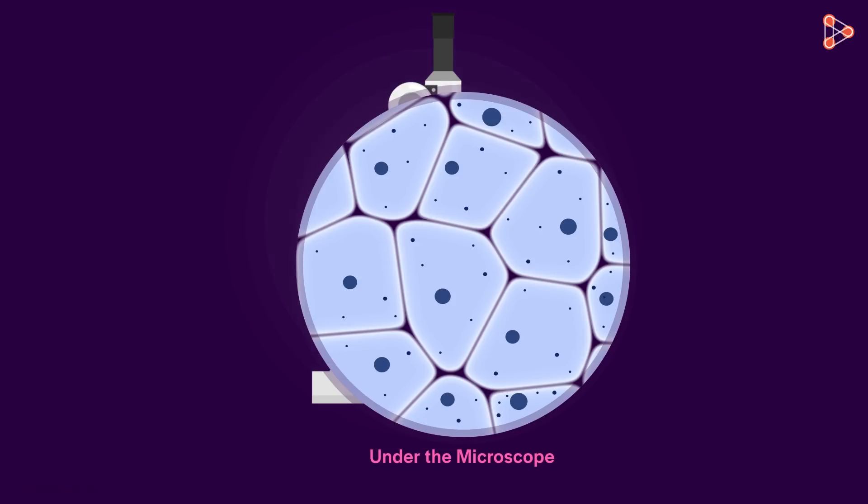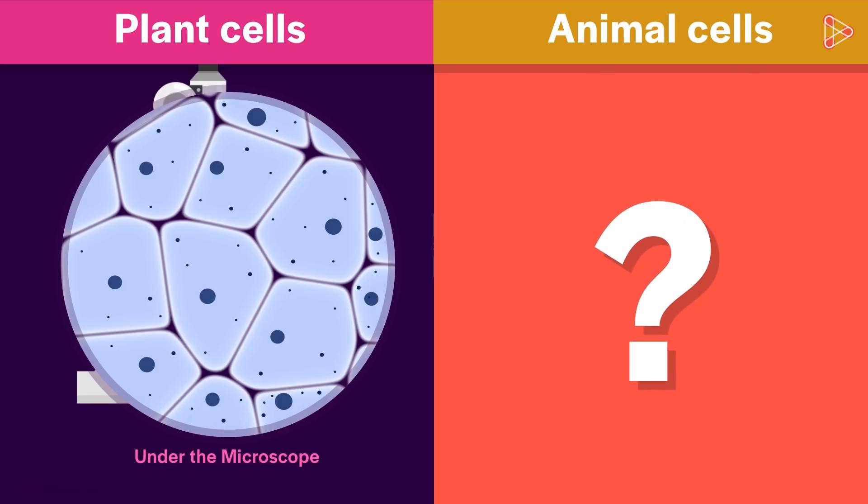Now before studying these, tell me one thing. Do plant and animal cells look the same? Do they have the same organelles? Or are the two types different in some ways?